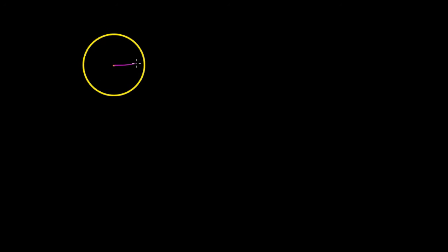A circle is a simple shape in geometry. It is the set of all the points in a plane that are at a given distance from a given point, and that point is known as the center of the circle.